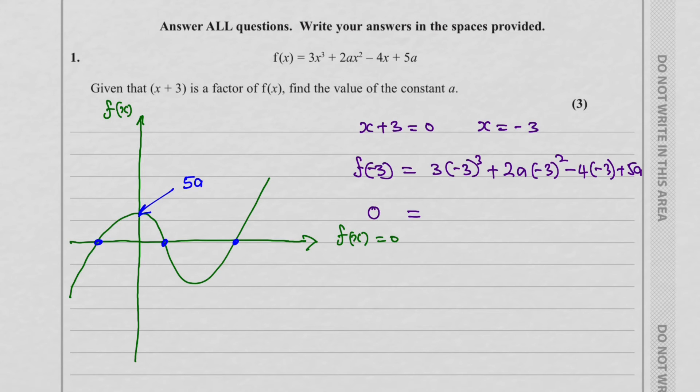So we get 0 equals minus 3 cube is minus 27 times 3, that's minus 81 plus 18a because minus 3 squared is 9, 9 times 2 is 18, plus 12 because minus 4 times minus 3 is plus 12 plus 5a.